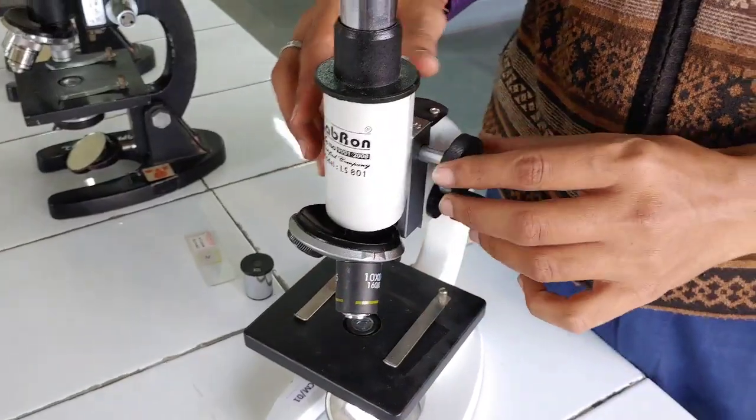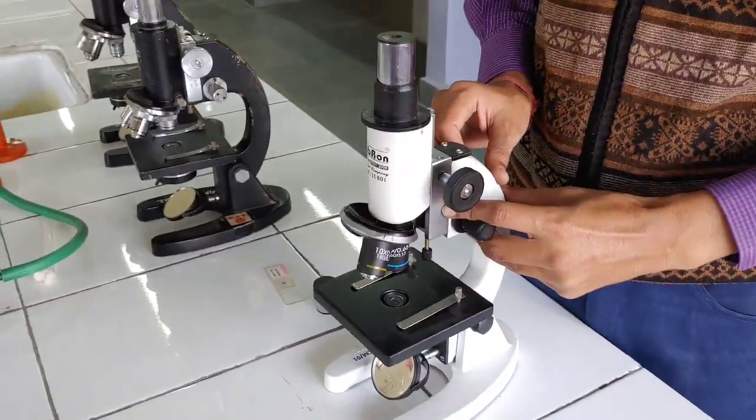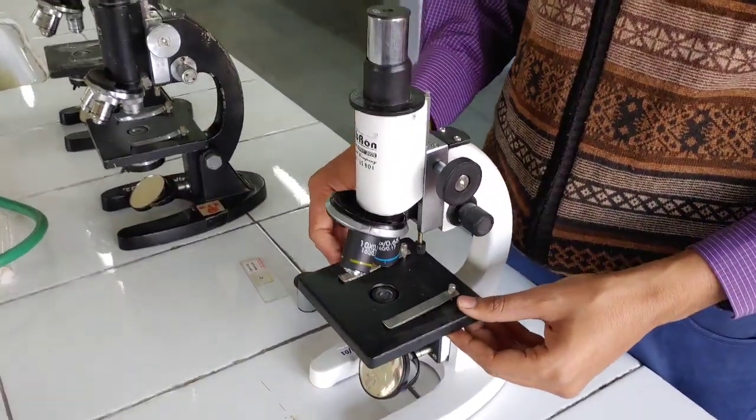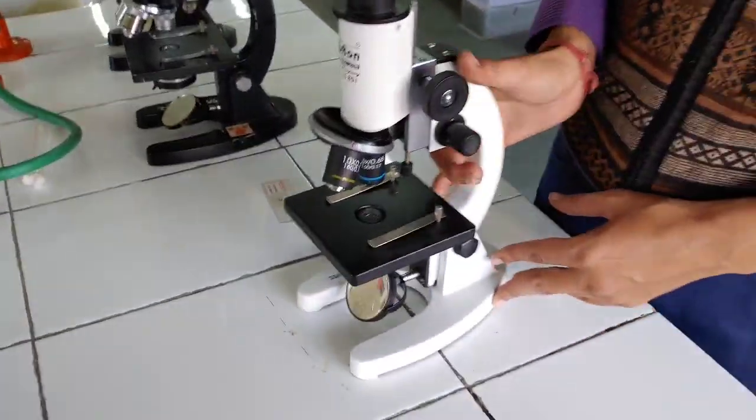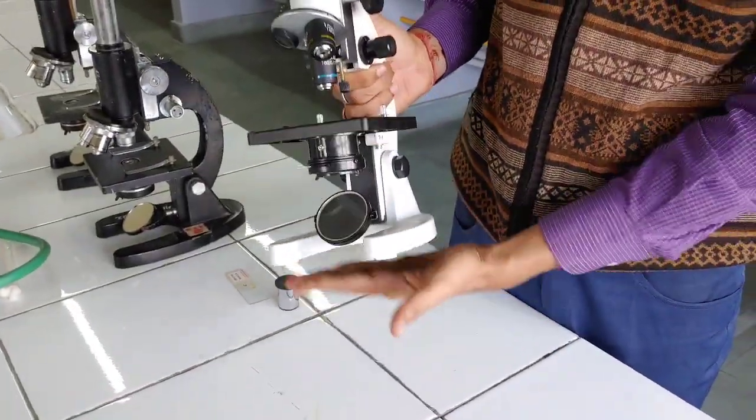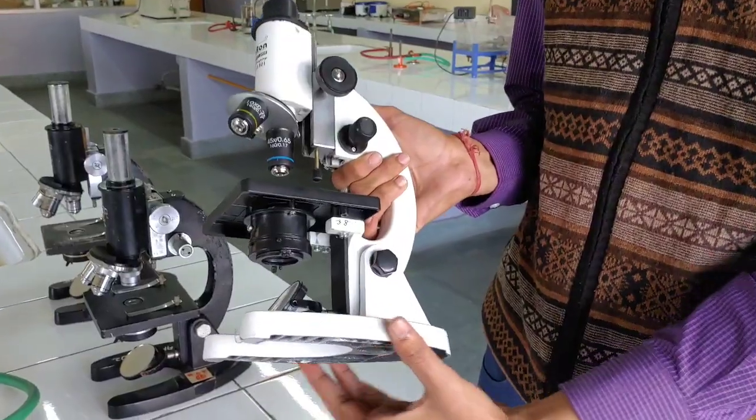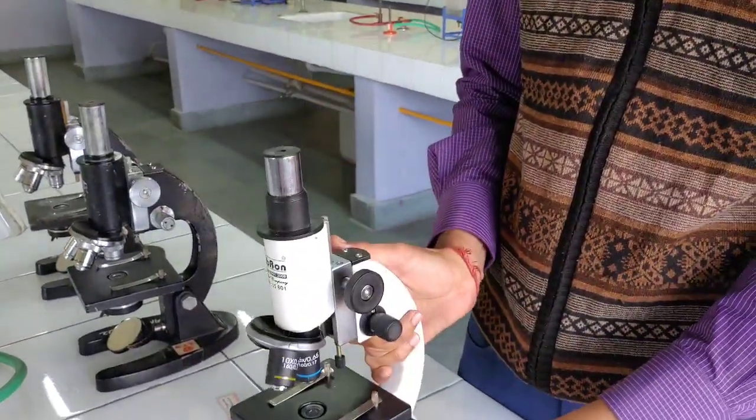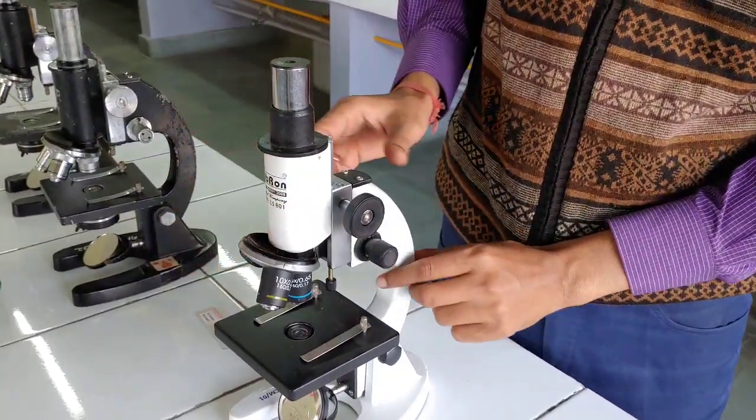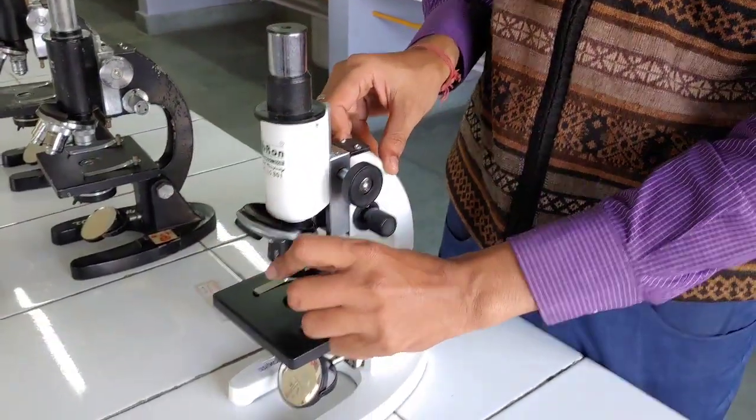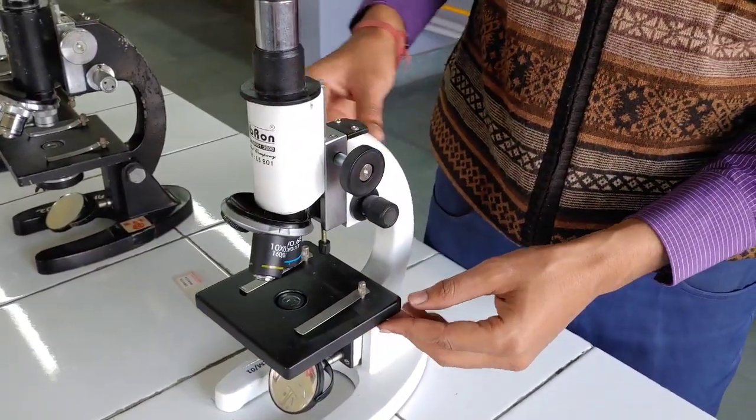So let's see what are the basic parts of the microscope. Now there are four basic parts of microscope. First is the support system. Next is the illuminating system. Next is the magnification system. And last one is the adjustment system.